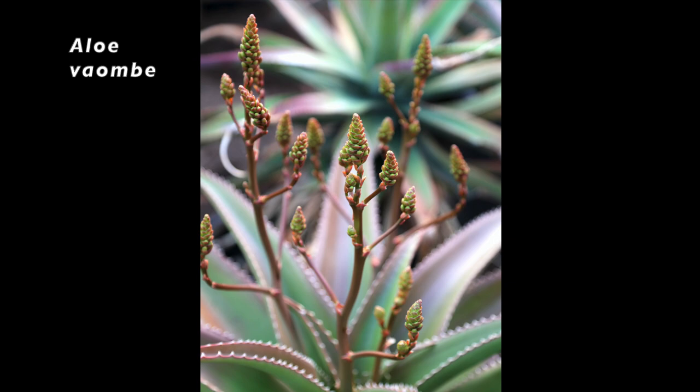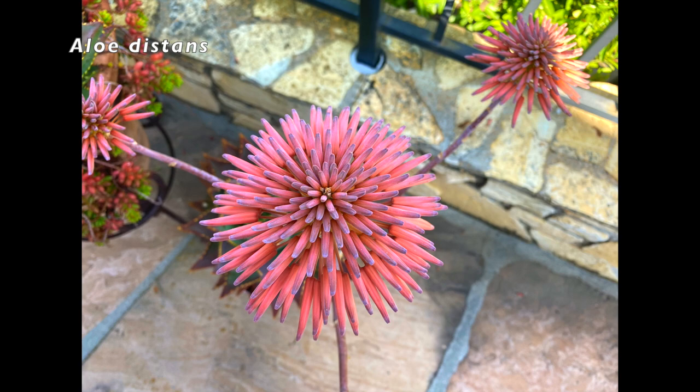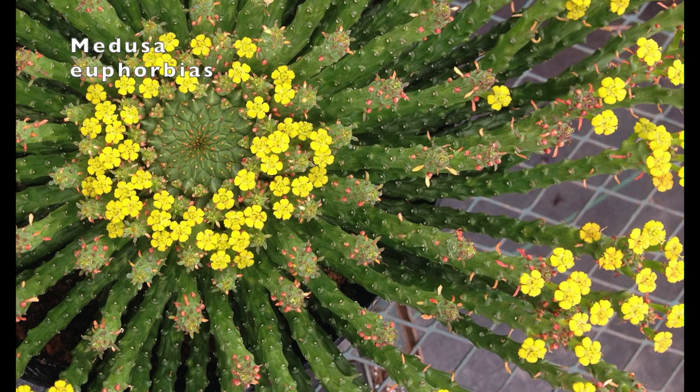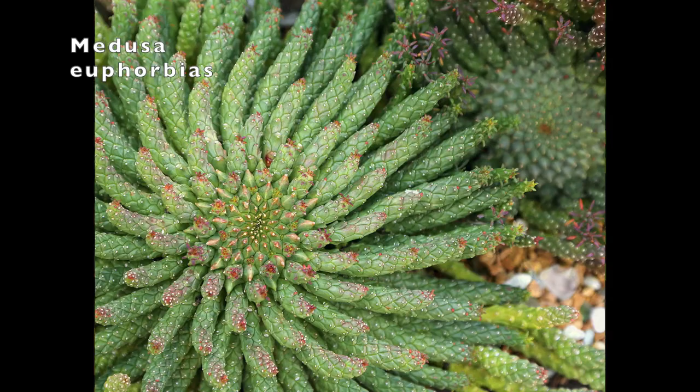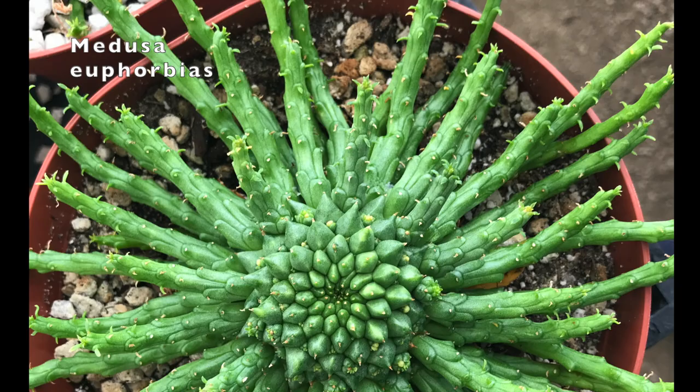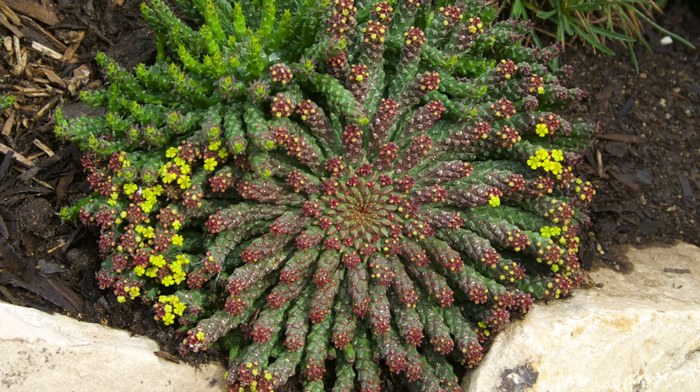The buds of aloe flowers also have a Fibonacci pattern. Don't these look like little pine cones? These are flowers still in bud of Aloe distans. Medusa euphorbias are known for stems radiating from a flat spiral that resembles the center of a sunflower. No two are exactly alike, and seldom do you find one that's perfect. Not surprisingly, those with large centers are most in demand.